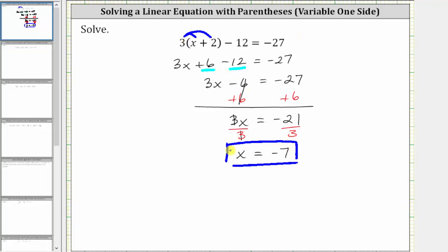If we substitute negative seven for x, we have three times the quantity negative seven plus two minus 12 equals negative 27. Simplifying on the left, we simplify inside the parentheses. Negative seven plus two is negative five, giving us three times negative five minus 12 equals negative 27.